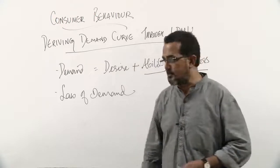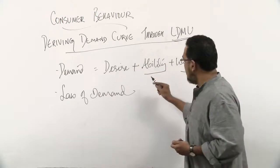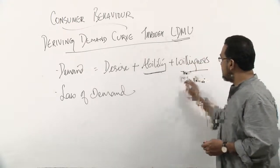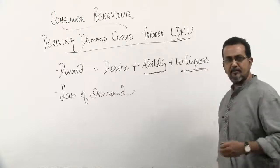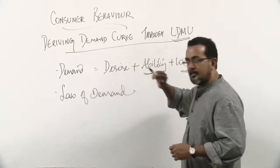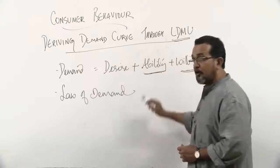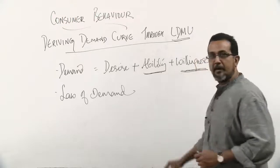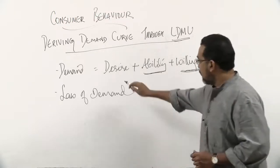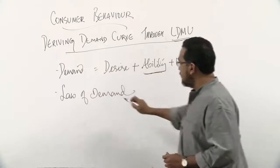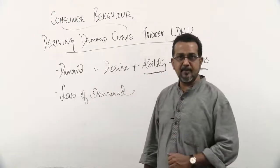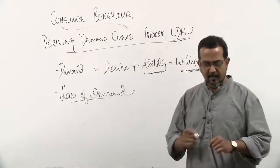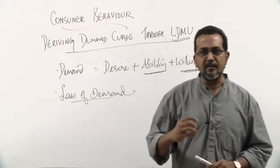In economics, your desire should be supported or backed by the ability to pay for it and the willingness to pay for it. For example, I may desire to buy a car, I may also have the ability to pay for it, but I may not be willing to pay 50 lakh rupees for it. Only when all three — desire, ability, and willingness — are combined do you have demand in economics.